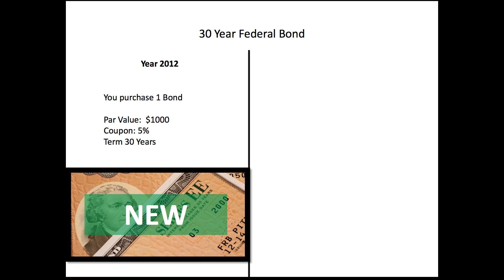Let's kick this off with a practical example. Let's assume that you purchased one bond in the year 2012 and that the par value for the bond was $1,000, it has a 5% coupon, and the term on it is 30 years. If that didn't make any sense, you probably need to go back to the first course at Buffettsbooks and take those lessons first.